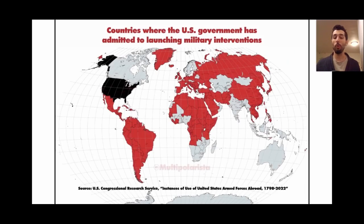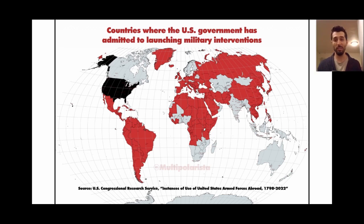This is a map of countries where the United States government has admitted to launching military interventions — not just electoral interference more broadly, but specifically military interventions, and just the countries where the U.S. government has admitted it. The original source is again the U.S. government itself, and you can see that this is actually most countries on earth. When you consider the hundreds of tribal nations that the United States has continued to overthrow, it's even worse than this image.